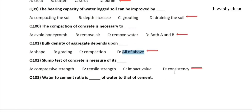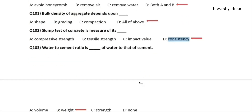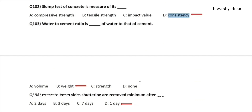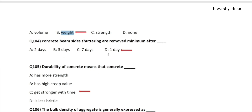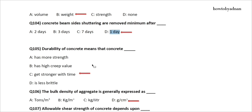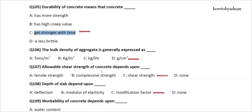Question 102: Slump test of concrete is a measure of its? The answer is option D: Consistency. Question 103: Water to cement ratio is the weight of water to that of cement. The answer is option B: Weight. Question 104: Concrete beam side shuttering is removed minimum after? The answer is option D: One day. Question 105: Durability of concrete means that concrete? The answer is option C: Gets stronger with time. Question 106: The bulk density of aggregate is generally expressed as? The answer is option D: Gram per cubic centimeter. Question 107: Allowable shear strength of concrete depends upon? The answer is option C: Shear strength.